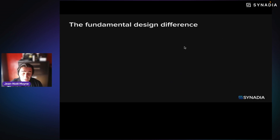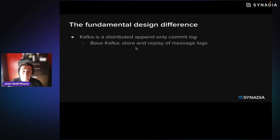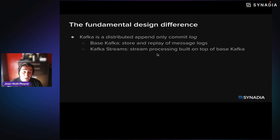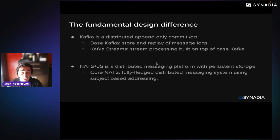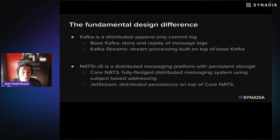There is a very fundamental design difference between the two. Kafka is a distributed append-only commit log, meaning it can store and replay message logs. You have other components such as Kafka Streams that let you do stream processing, built on top of base Kafka. Compare that to NATS and JetStream, which is a distributed messaging platform with added persistent storage — that's the part JetStream does. Core NATS is a fully-fledged distributed messaging system using subject-based addressing, supporting request-reply, queuing, wildcard subscribing, and many deployment architectures. And then on top of this, you have JetStream as a distributed persistence layer.